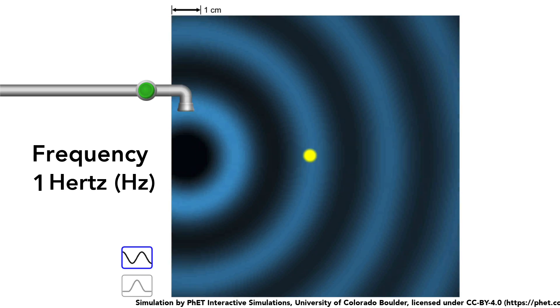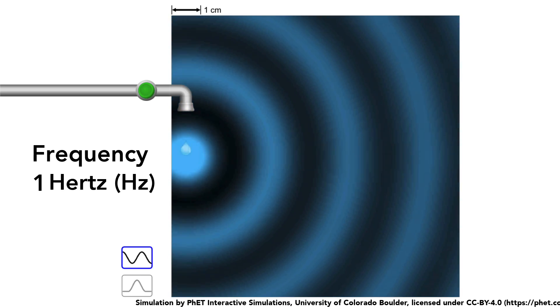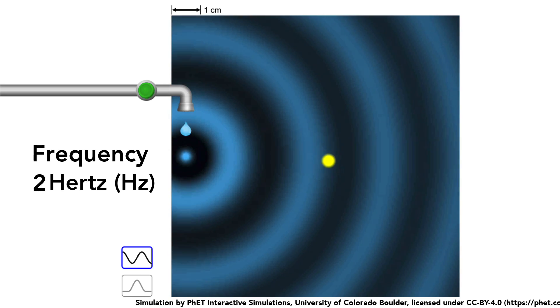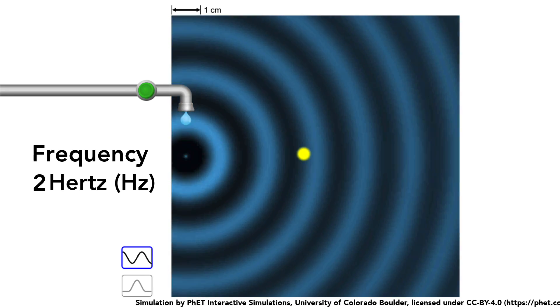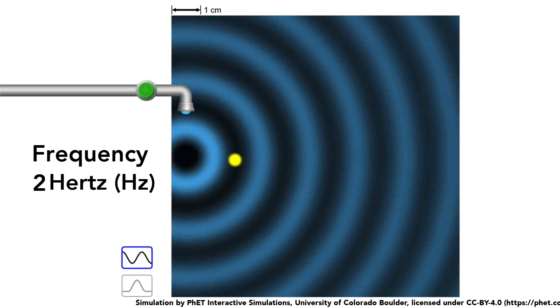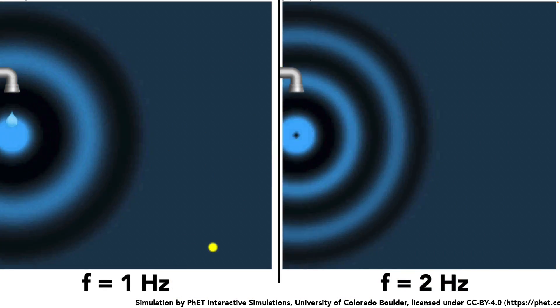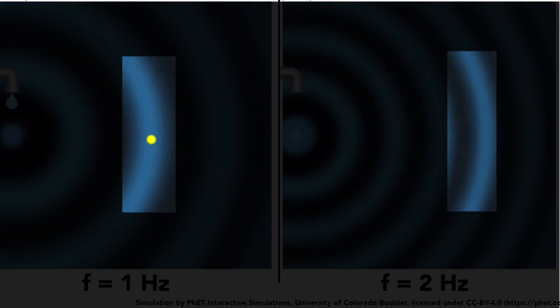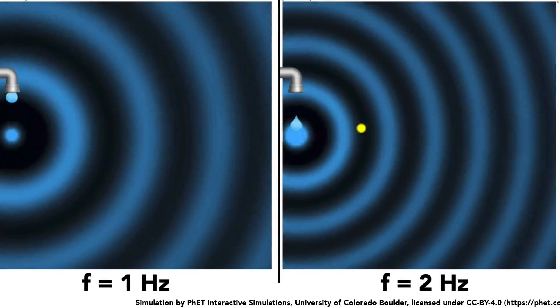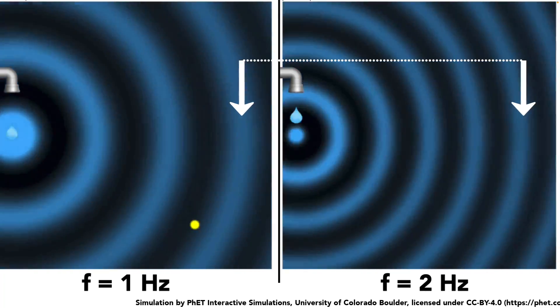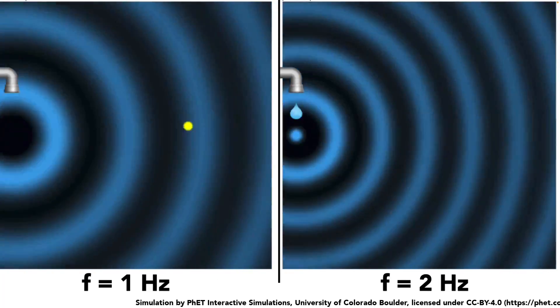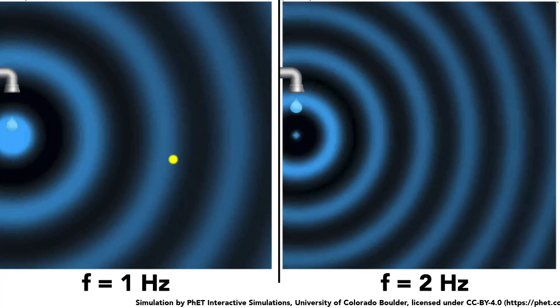Now let's see what happens if I increase the rate of water drops — two drops falling every second. Now you can see there'll be two waves passing through a point every second, so this wave has a frequency of two hertz. Comparing the two side by side: one hertz versus two hertz. But look at the speed of the wave — it's the same in both cases. The wave is traveling the same distance in a given time. So do not confuse frequency with speed; the speed is the distance the wave travels per second, which is different from the frequency.